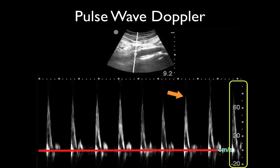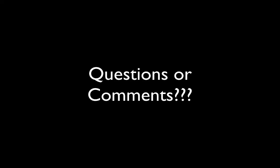That's just showing you your scale, which I already pointed out, and then the baseline here. Those can be adjusted. Sometimes, if you set your scale too low, you will see what's called aliasing, and it will come around to the other side. That's about it for Pulse Wave Doppler. If you have any questions, feel free to leave those here, but thanks for listening.